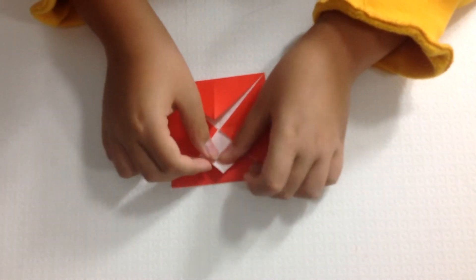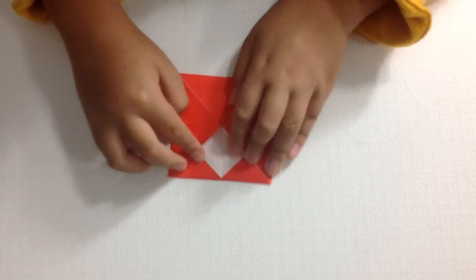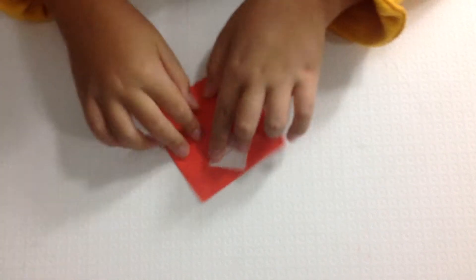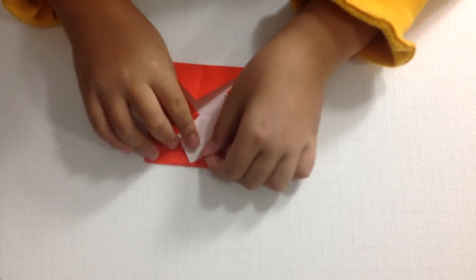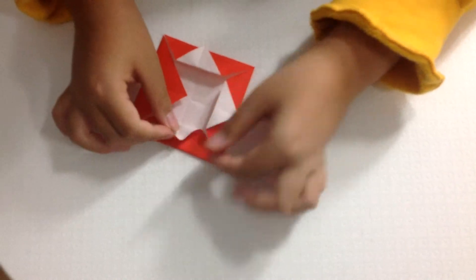Then, open up the points from the center and fold it back up to the line here, the edge. Repeat for all four sides.